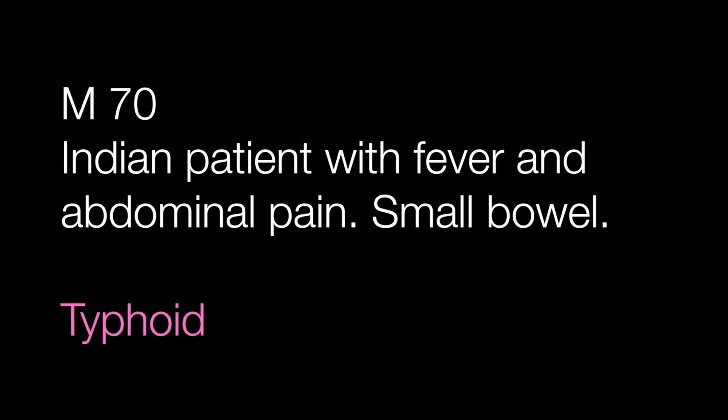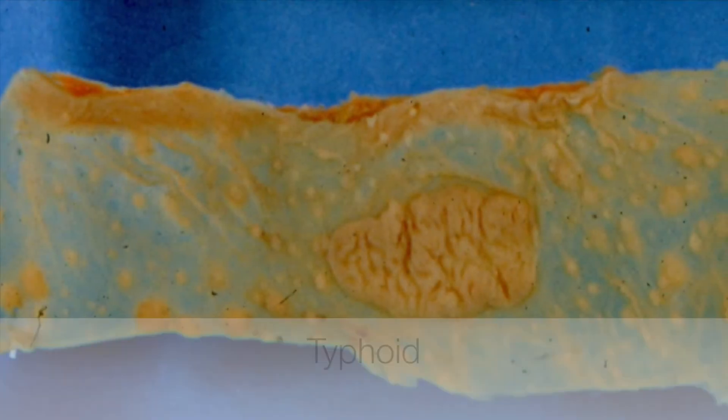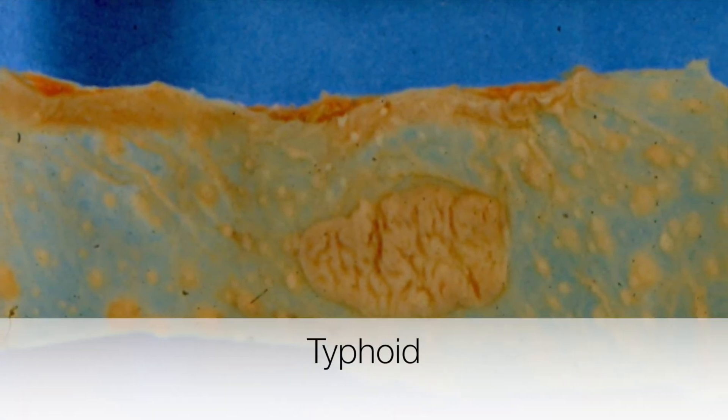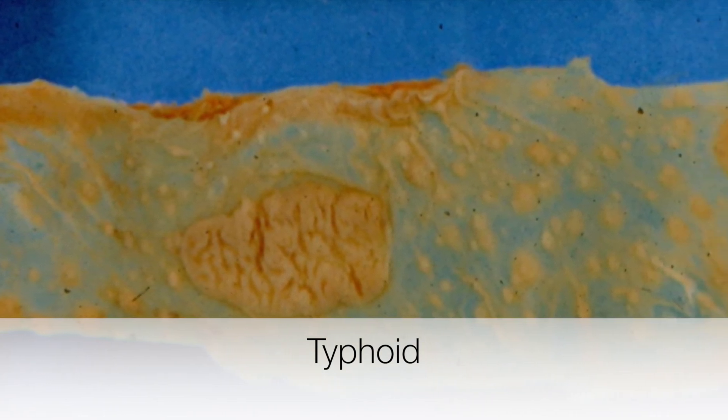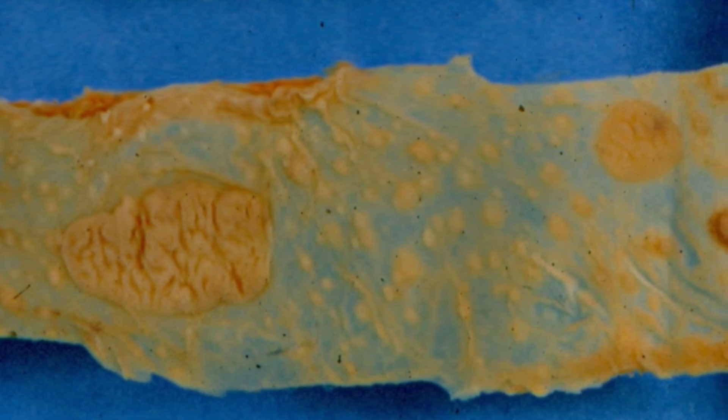The male of 70 who suffered from fever and abdominal pain had typhoid. The piece of small bowel shows ulceration of the Peyer's patches, which is typically seen in typhoid.